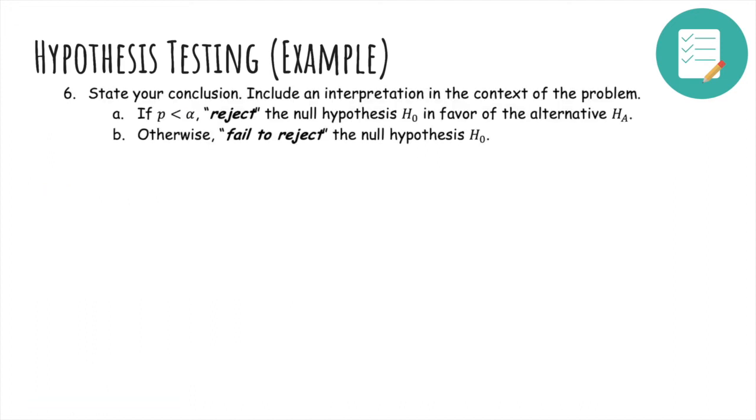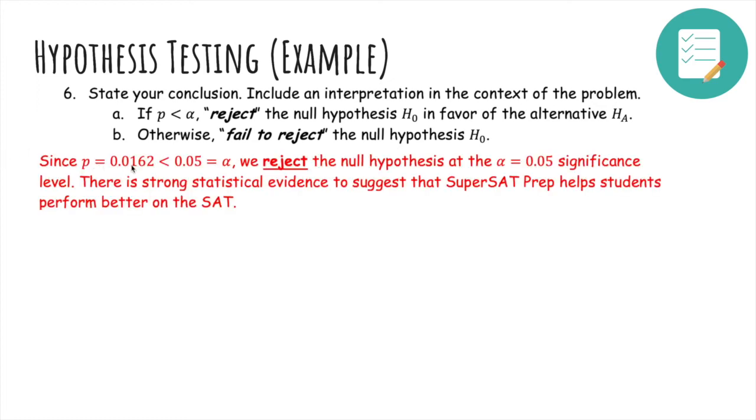Now we state our conclusion. So if p is less than α, we're going to reject the null hypothesis in favor of the alternative hypothesis. Otherwise, we'll fail to reject the null hypothesis. So let's do it. Since p = 0.0162 is less than 0.05, which is our α that we chose earlier, we'll reject the null hypothesis at the α = 0.05 significance level and say that there's strong statistical evidence to suggest that SuperSAT Prep actually helps students perform better on the SAT.